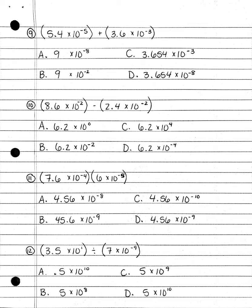Number 10. 8.6 times 10 to the negative second power minus 2.4 times 10 to the negative second power: A. 6.2 times 10 to the zeroth power; B. 6.2 times 10 to the fourth power; C. 6.2 times 10 to the fourth power; or D. 6.2 times 10 to the negative fourth.